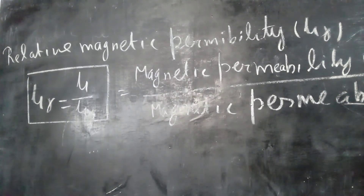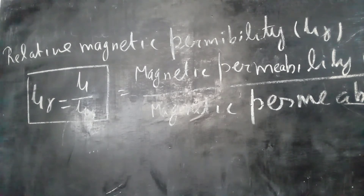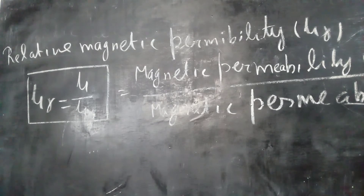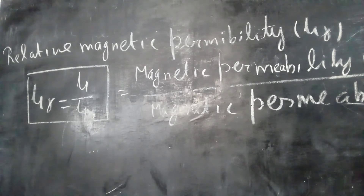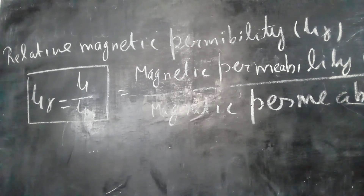The ratio of magnetic permeability of a medium to the magnetic permeability of vacuum is called relative permeability. This is the ratio of the same physical quantity having the same unit.